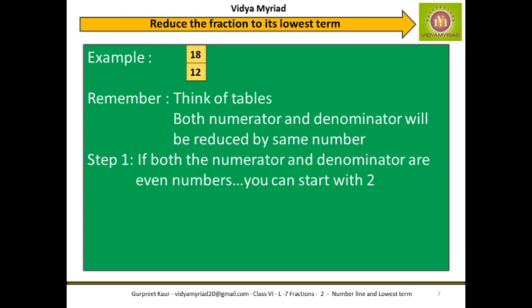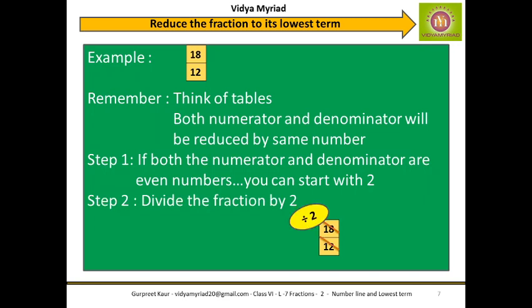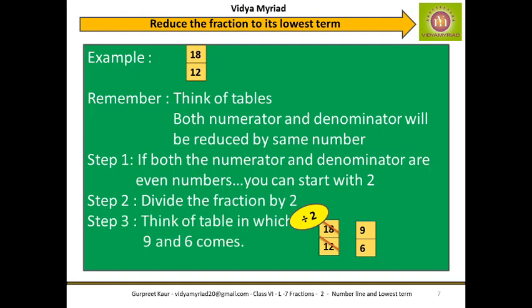Divide 18 and 12 by 2. I will write my fraction and cross it out — 2 nines are 18 and 2 sixes are 12. Now my next step is to think of a table where 9 and 6 can come. It is the 3 times table — 3 threes are 9 and 3 twos are 6. So my answer is 3 by 2. Can this be further reduced? No — 3 and 2 are not further divisible, so the answer stays as it is.